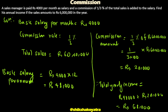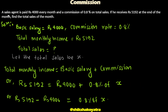Next question: a sales agent is paid ₹4,000 every month as basic salary and a commission of 0.8% on total sales. If he receives ₹5,192 at the end of the month, find the total sales for the month. The total monthly income of ₹5,192 equals basic salary plus commission.